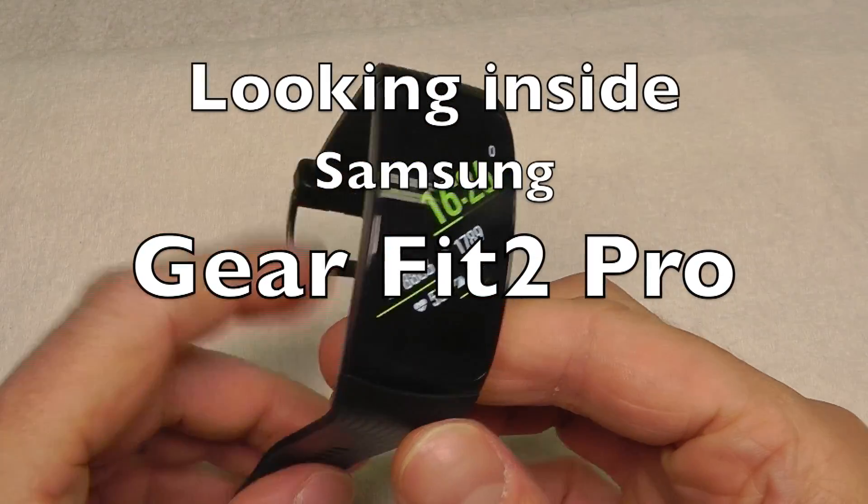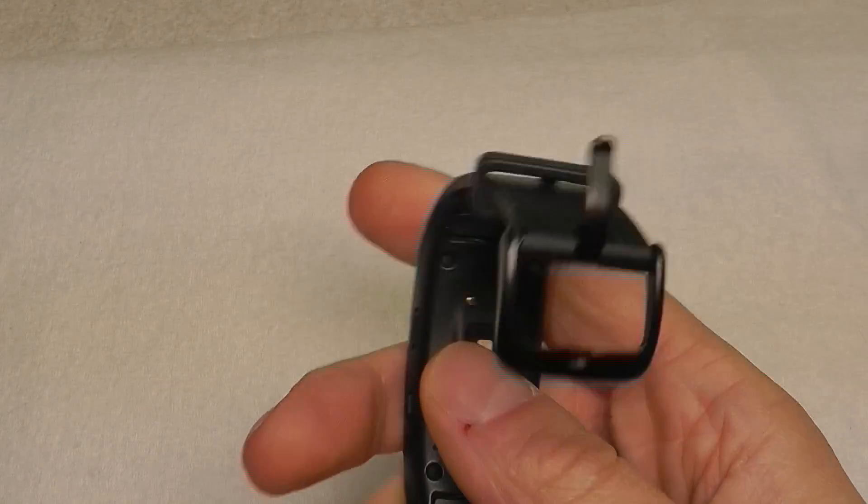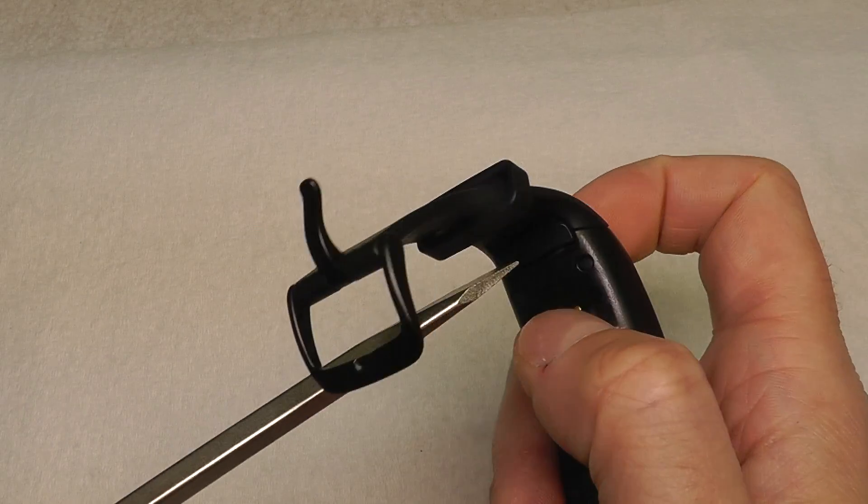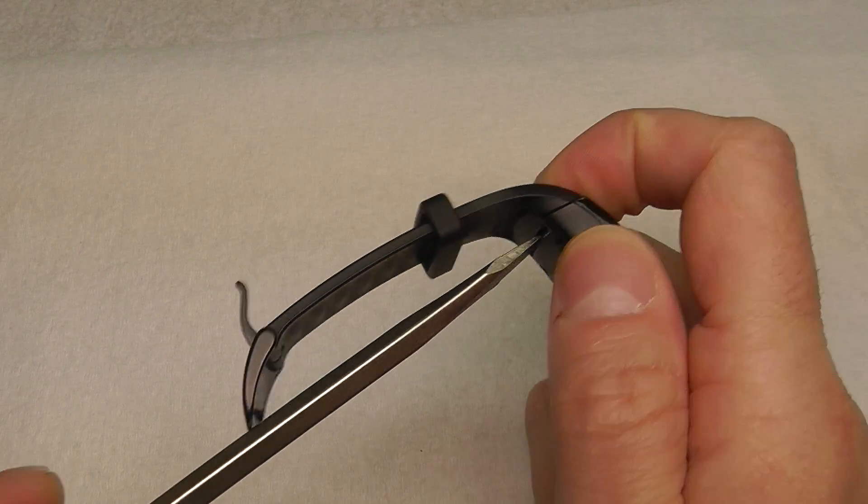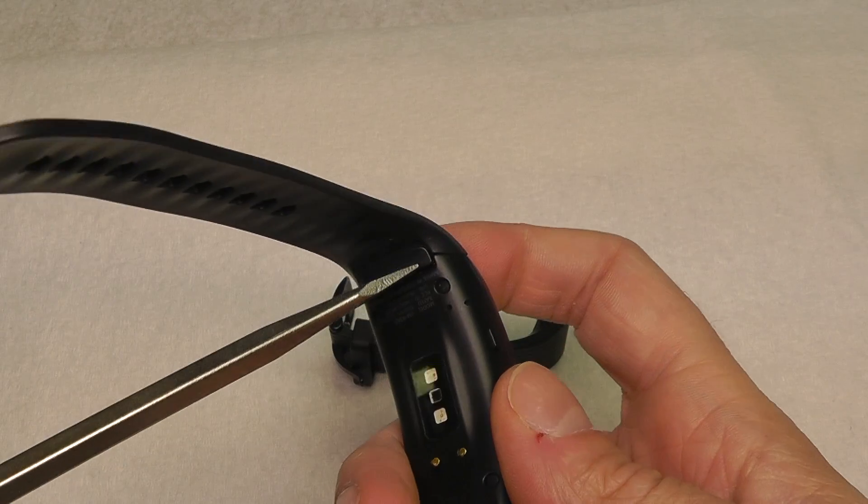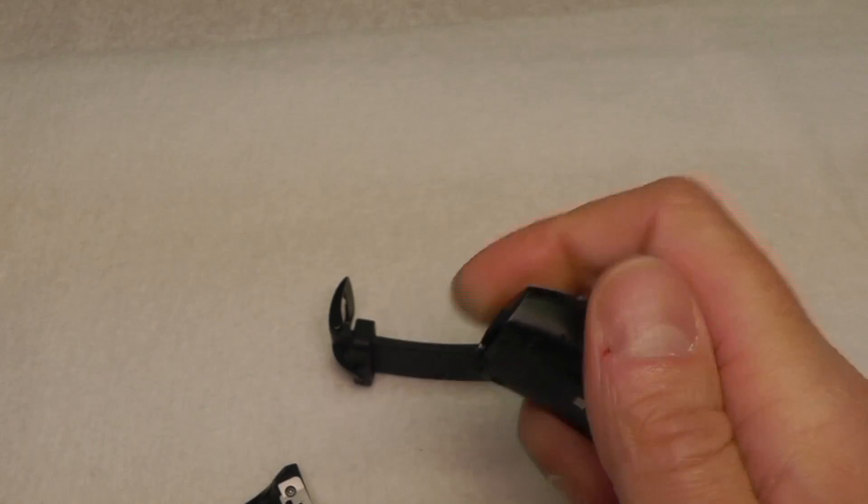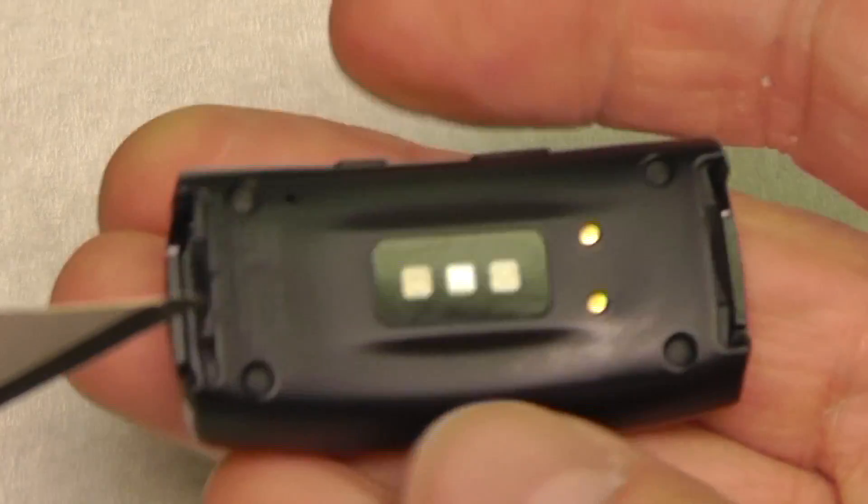Let us have a look inside of this Gear Fit 2 Pro. I'm starting out by removing the wristband, just popping this off. This is really easy and makes it easier to disassemble the rest, giving me a little bit more space.